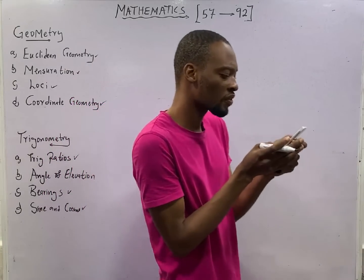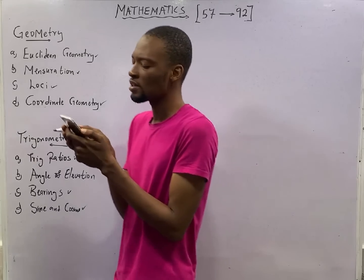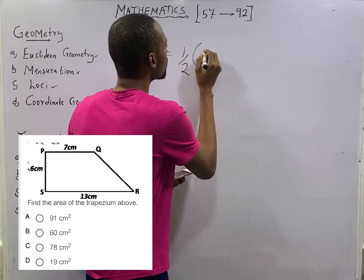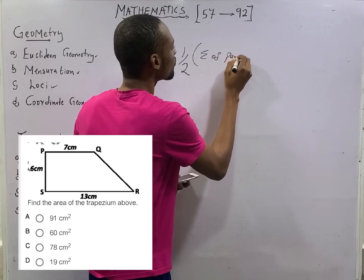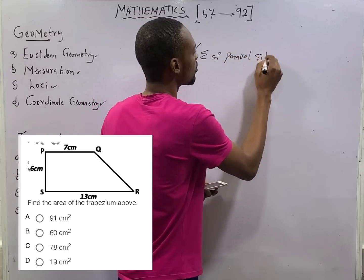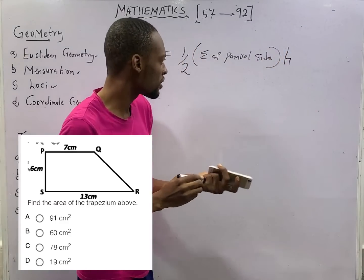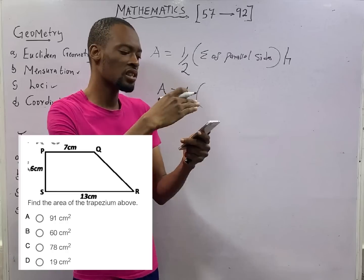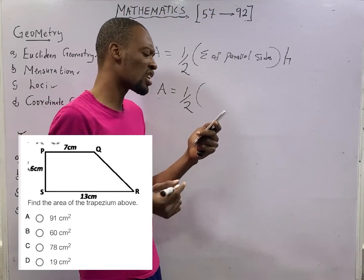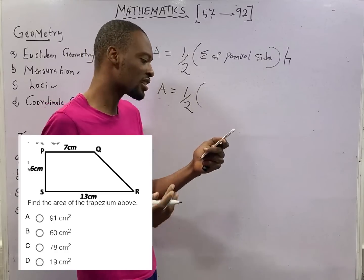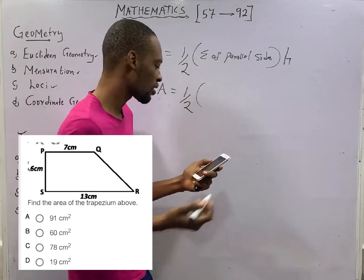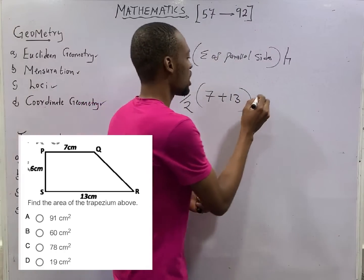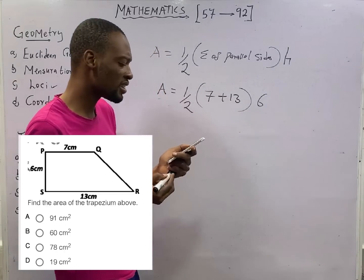This question says, let's find the area of the trapezium above. Area of trapezium A is 1 over 2 times sum of parallel sides times height. This is the area of trapezium A equals 1 over 2. The parallel sides are simply the one above and the one below. So in this diagram, 7 and 13 are the parallel sides. And sum means add the parallel sides. That should give you 7 plus 13 times height. The height is 6 centimeters times 6.